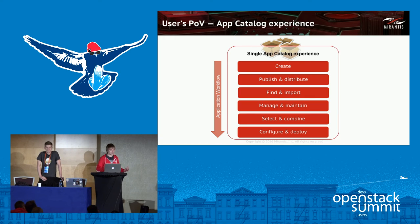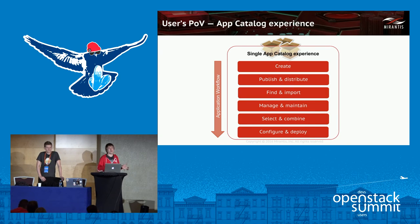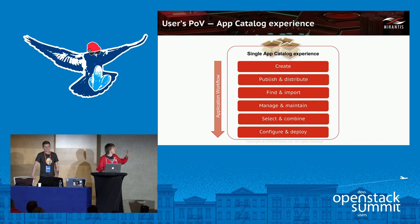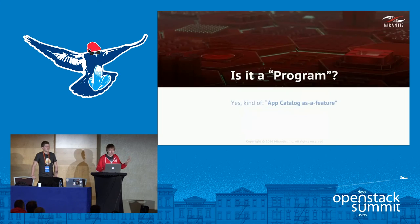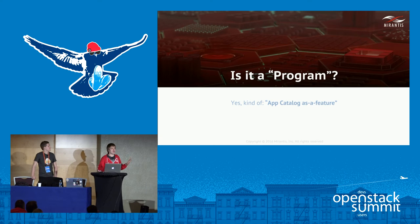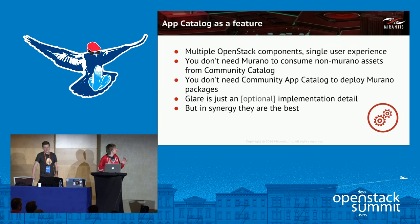Users just consume a single application catalog user story. They have a single catalog experience and a single workflow, starting with create and ending with deploy. They don't care about what bits of software are running under the hood. So we understand that there is an application catalog feature which is much more than any of the individual projects beside it. At some point OpenStack had the notion of programs — then that was abandoned — but in this case, we may speak about app catalog as a feature which is more than any of the projects composing it.